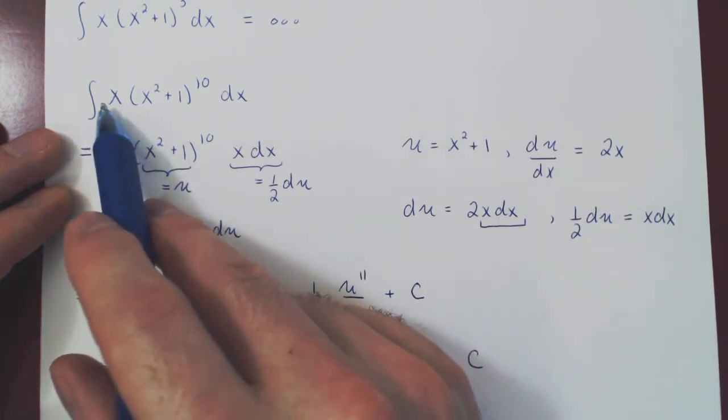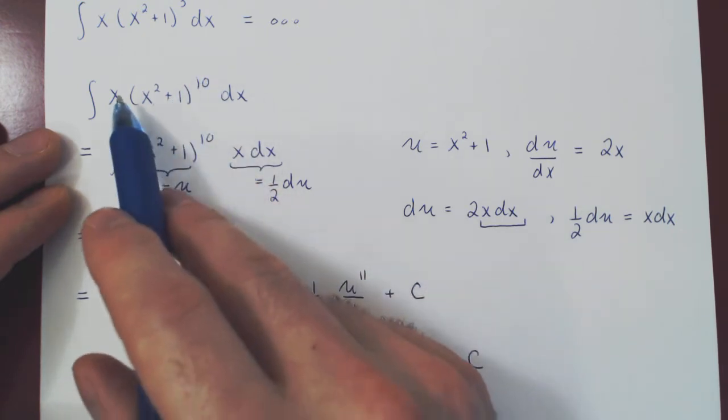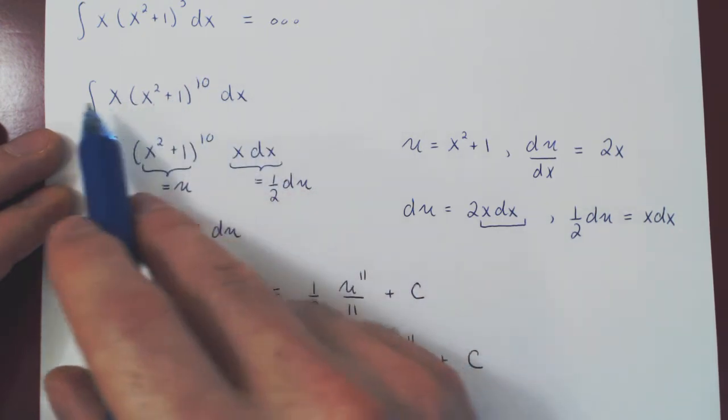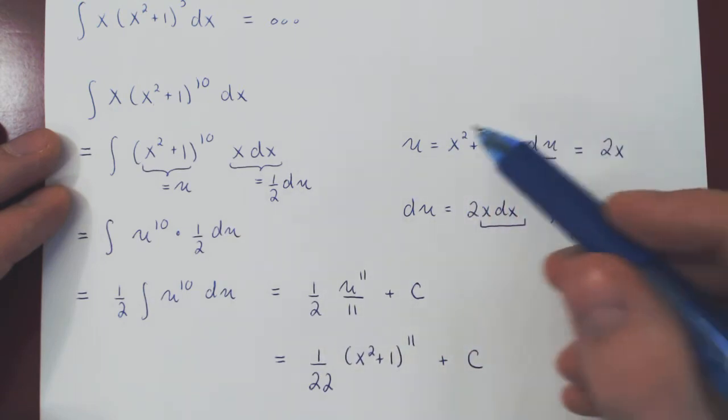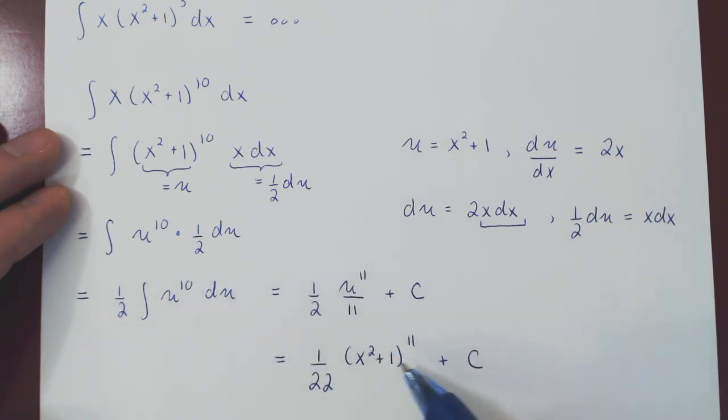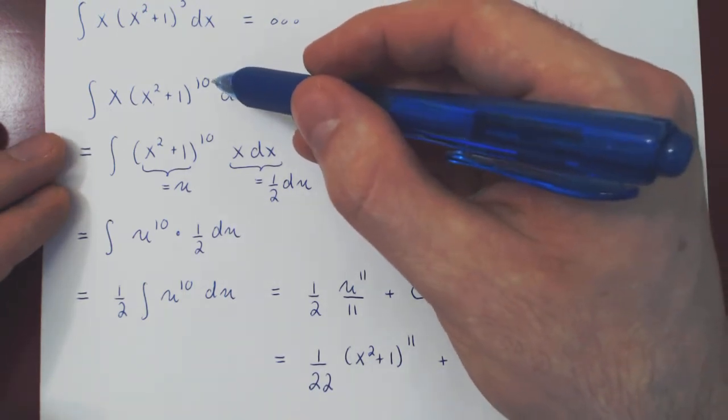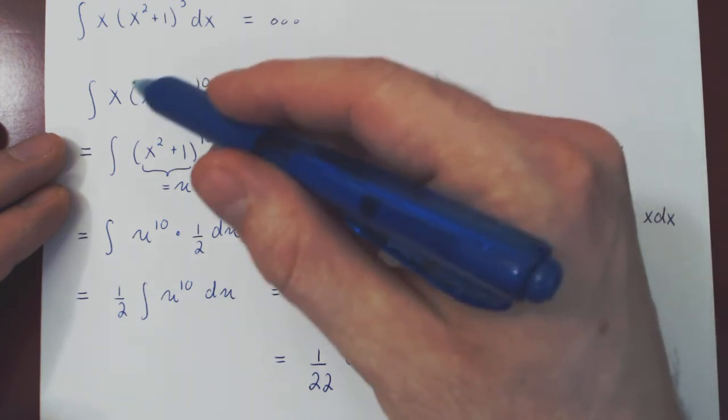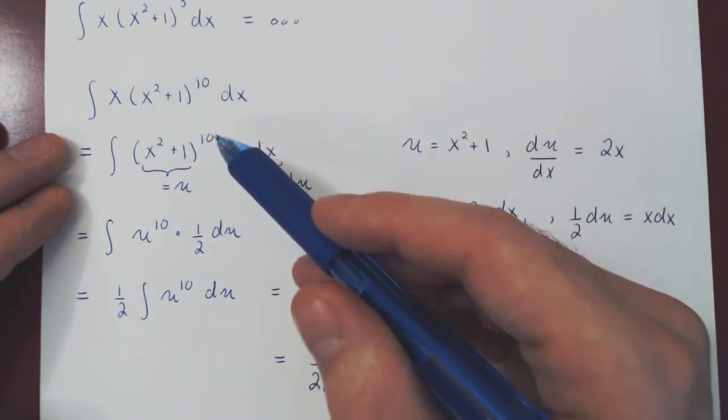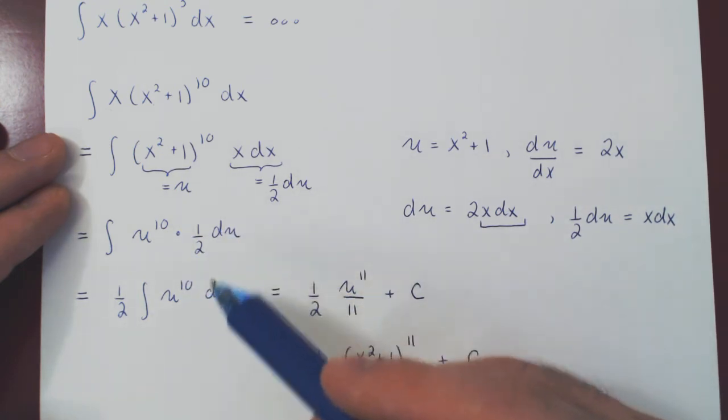So you see that if we had done this directly by expanding out x squared plus 1 to the 10, multiplying by x, this would have been a lot of work. By making a clever u-substitution, the integral became essentially trivial, and then we have our answer back as a function of x. And you can imagine that if the power here was not 10 but 100, multiplying out would be a whole lot worse. No matter what the power is, with a u-substitution, it will always work in two or three lines.